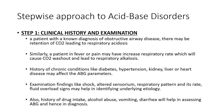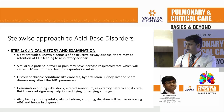Any approach begins with history. Clinical history is very important. A patient with known obstructive airway disease will have elevated CO2 leading to respiratory acidosis. A patient with fever or pain may be hyperventilating and be in respiratory alkalosis. Knowing chronic conditions like diabetes, hypertension, kidney, liver, or heart disorders affects your interpretation of ABG parameters. Examination findings — is my patient in shock, altered sensorium, what is the respiratory pattern — and history of drug intake, alcohol abuse, vomiting, or diarrhea all help in assessing the ABG and reaching a diagnosis.